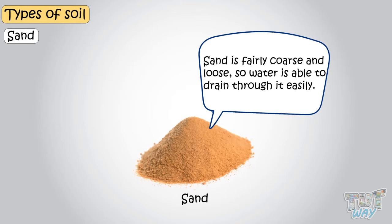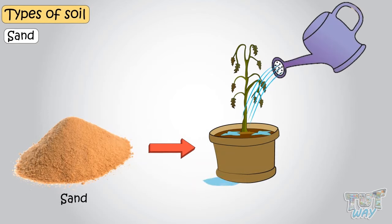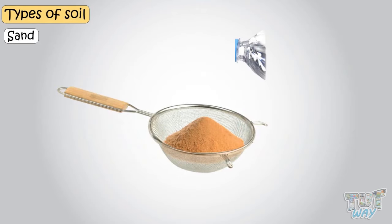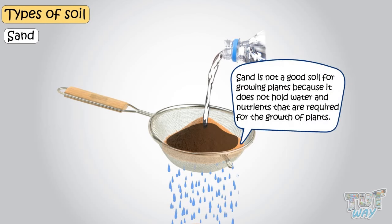Sand is fairly coarse and loose, so water is able to drain through it easily. While this is good for drainage, it is not good for growing plants, because sandy soil will not hold water or nutrients. Take some sand in a strainer and add water — water will easily drain through the sand. So sand is not good soil for growing plants, because it does not hold water and nutrients required for the growth of plants.